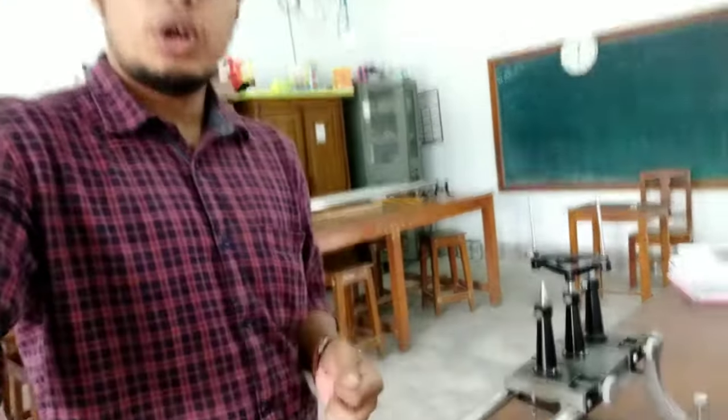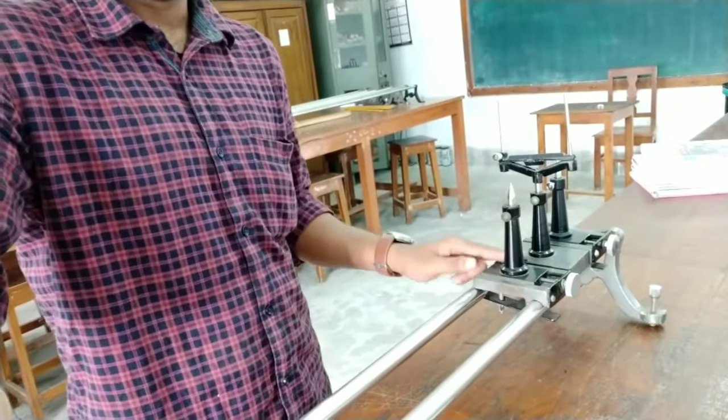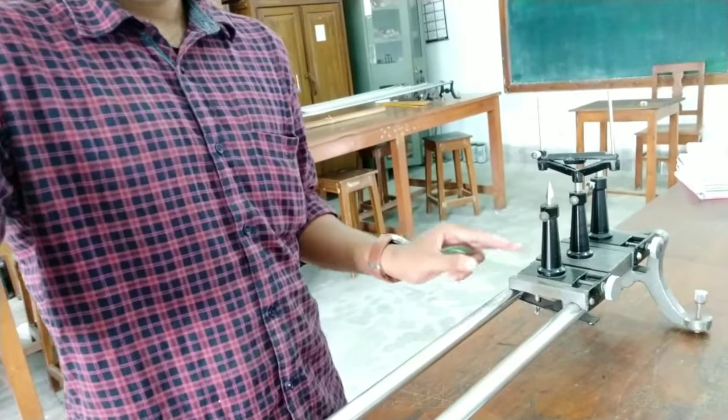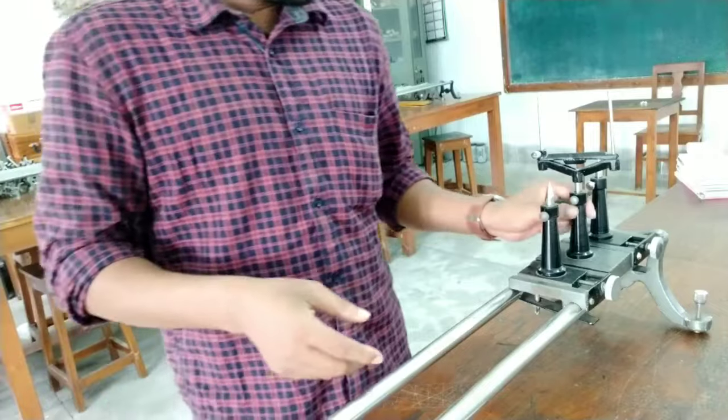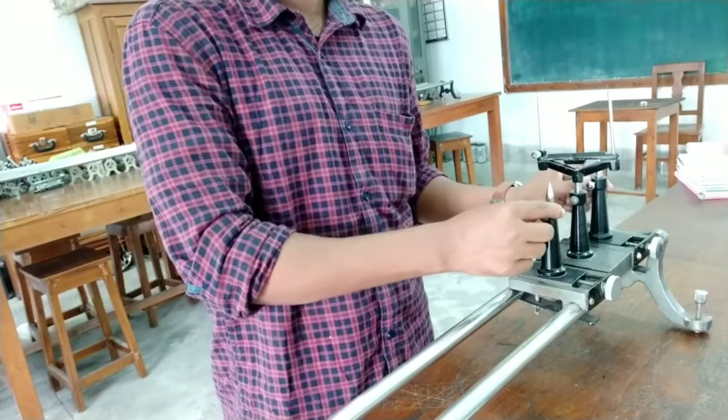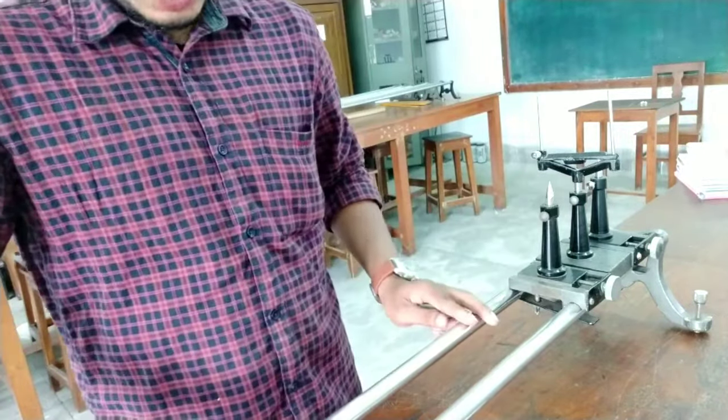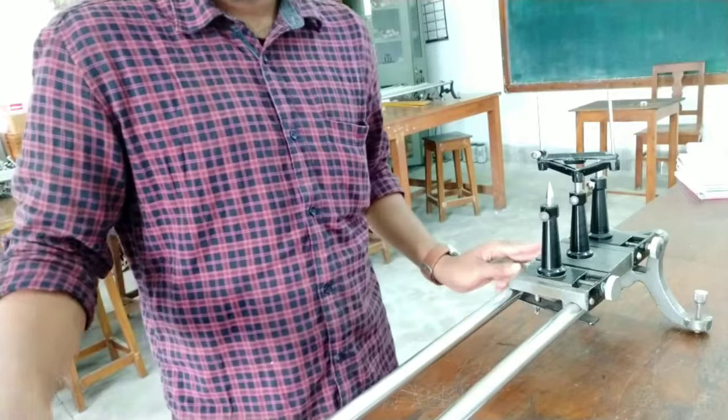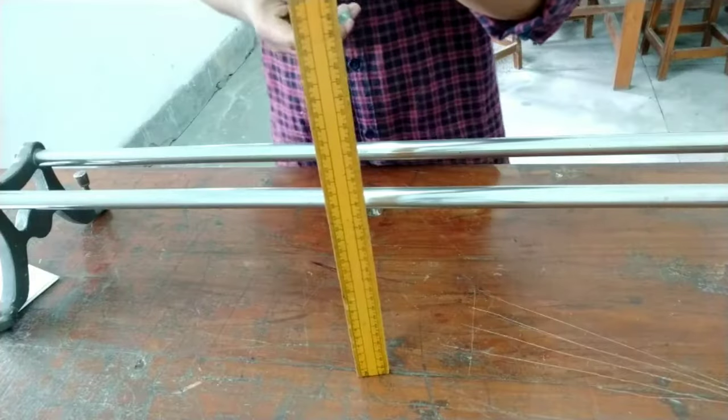This one is the optical bench, and this is called the lens holder. And these are the two pins and one scale is calibrated over here from 0 to 150. The procedure is first you have to find the rough focal length of the lens by projecting the image on the table.